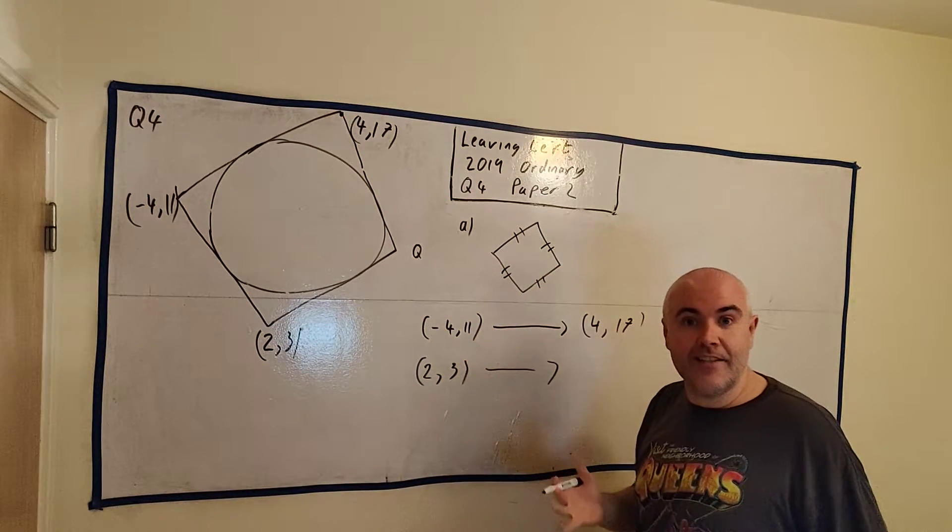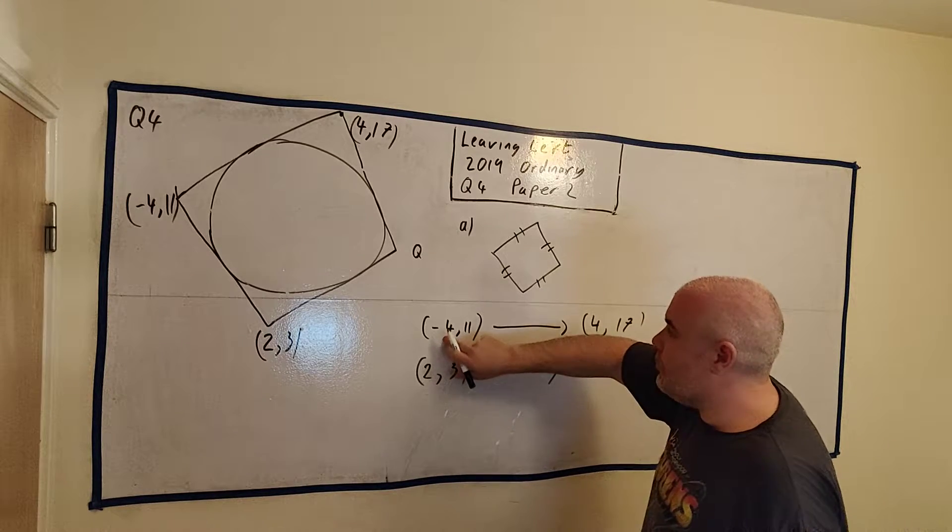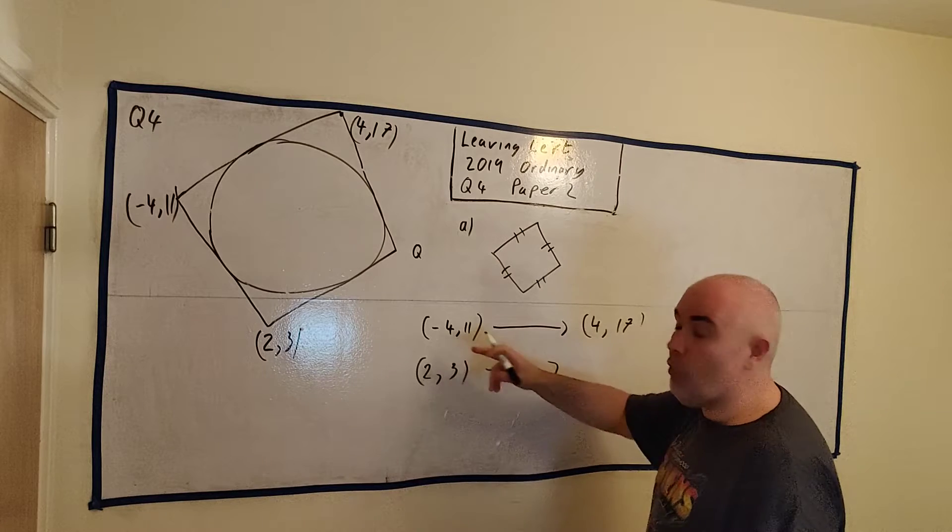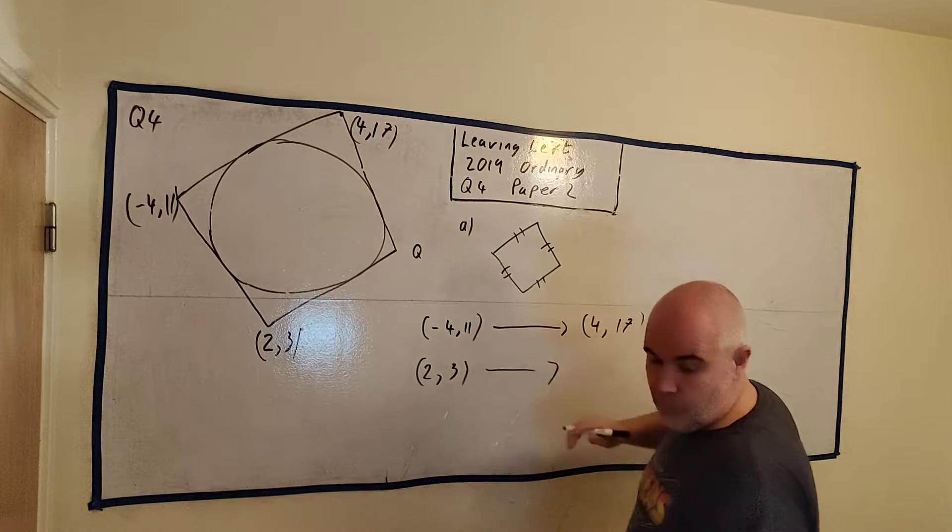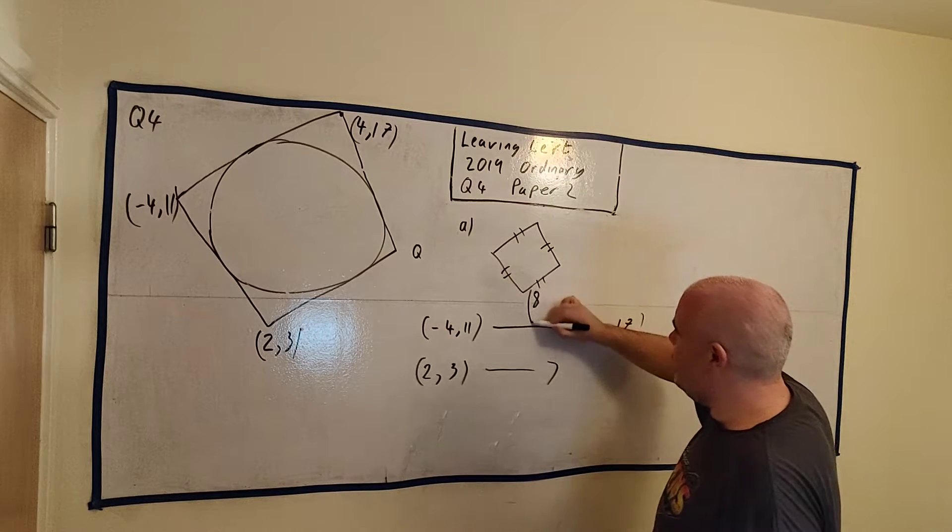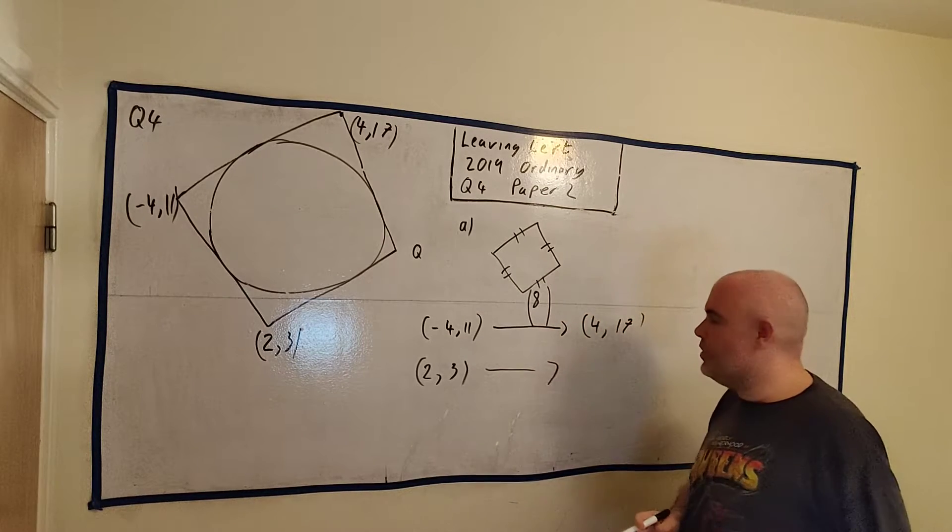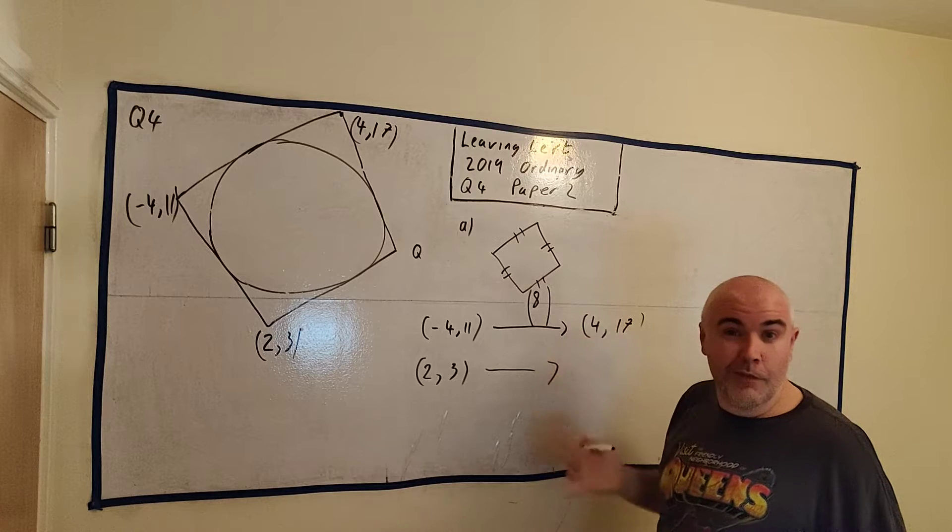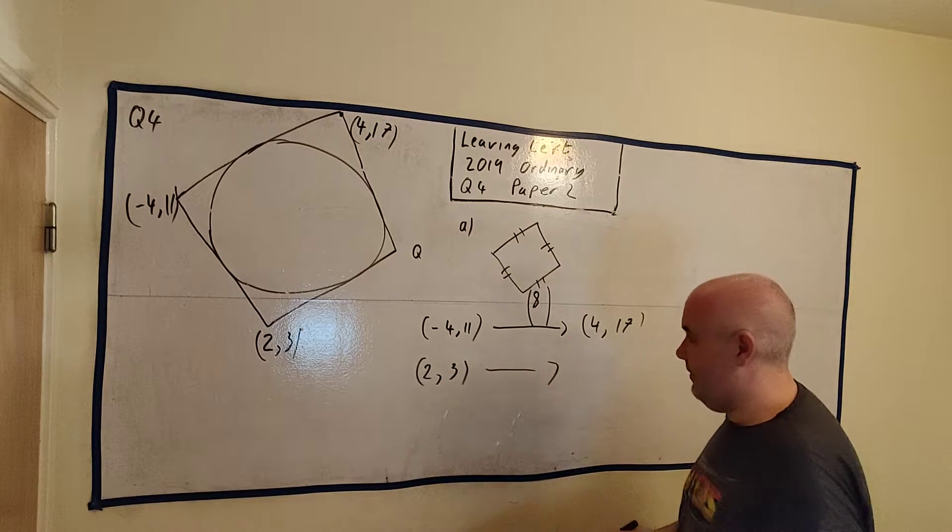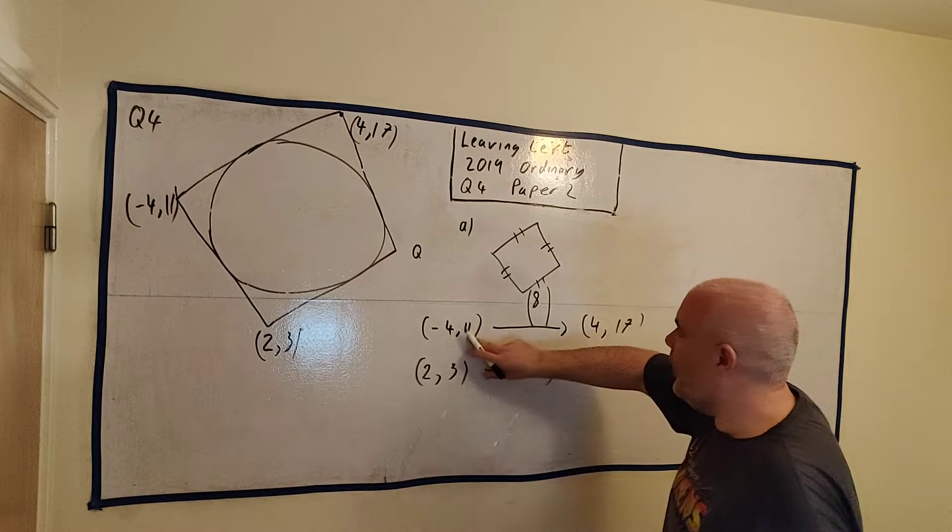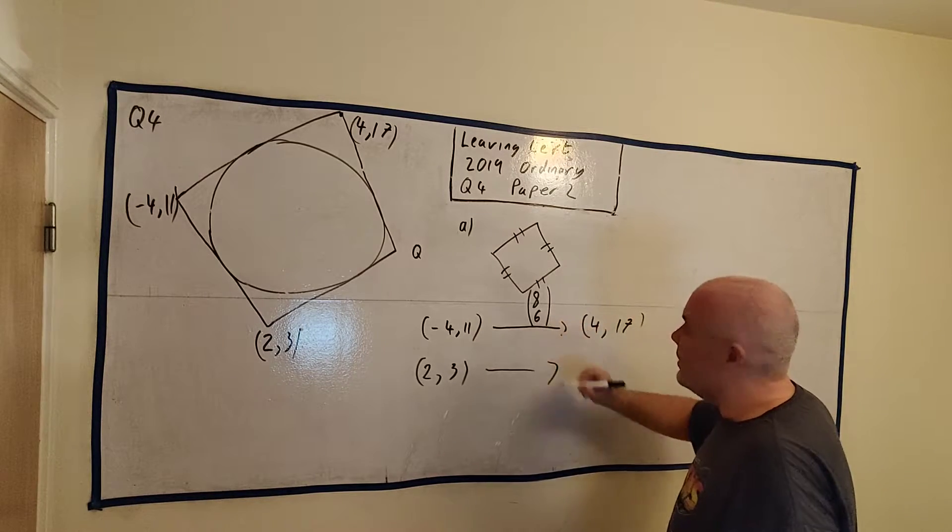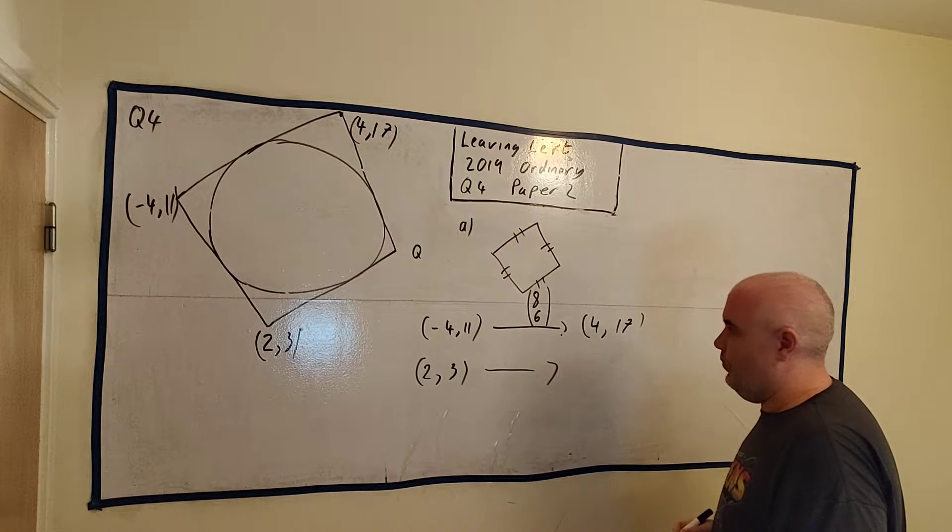Let's see how much this X and Y moves. How much does minus 4 move to get 4? Well it has to move 8, plus 8. This is actually using vectors - you don't need to know too much about this, you don't even have to write it the way I'm writing it. Just recognize that the X is moving 8, and what's the Y doing? The Y is moving 6, plus 6.